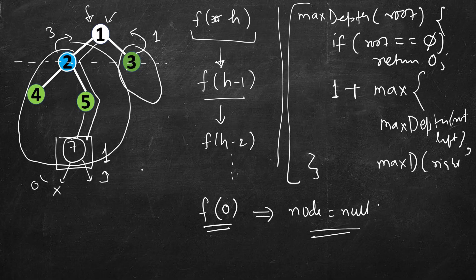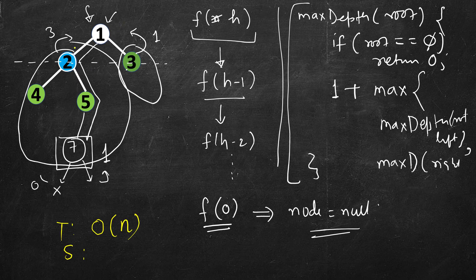Let's see what the time complexity is. We are just doing one traversal of the tree, visiting each node once. So the time complexity is O(n). Space can be, in the worst case, O(n) due to the call stack. If it's a linear tree and not a balanced tree, then all nodes will be in the call stack.